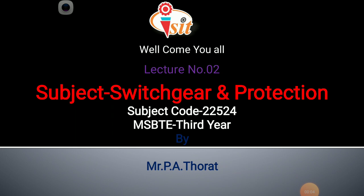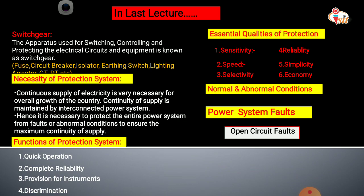Hello everyone, welcome to the second lecture of Switchgear and Protection. In the last lecture we discussed the introduction of switchgear and protection and the various parameters used. Starting with the definition: switchgear is nothing but the apparatus used for switching, controlling and protecting the electrical circuits and equipment. For example, fuse, circuit breaker, isolator, earthing switch, CT, PT, and lightning arrester.